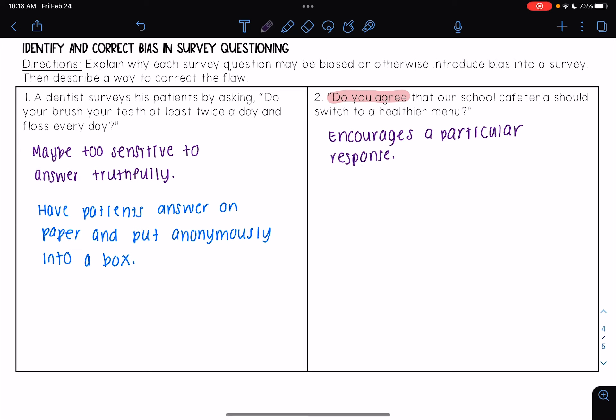To fix this issue, we could instead just ask students whether they think the school cafeteria should switch to a healthier menu. Instead ask for their opinion or have them check a box.